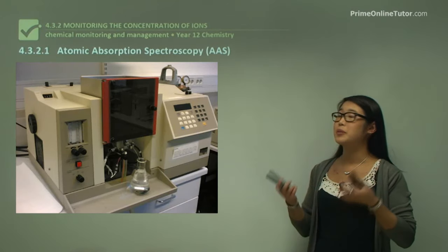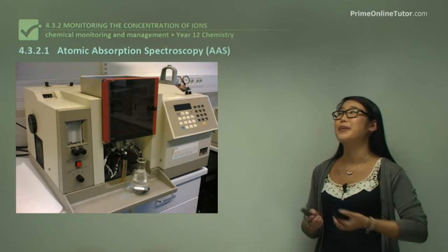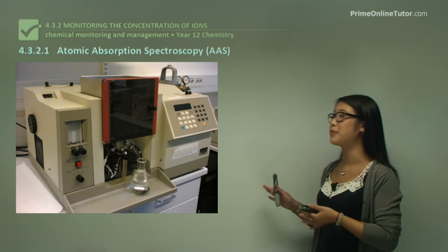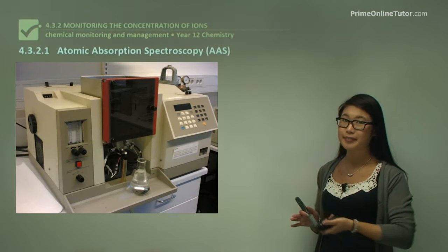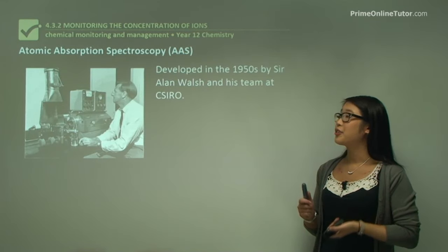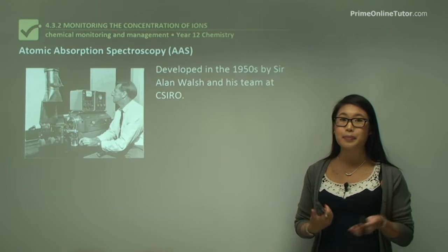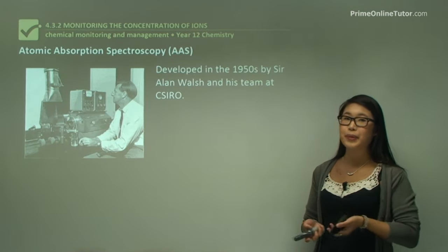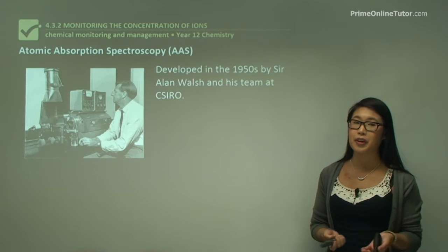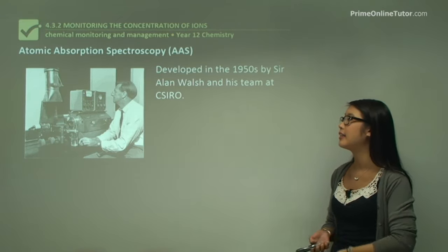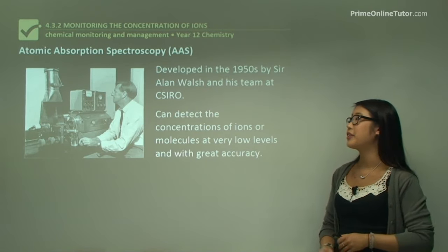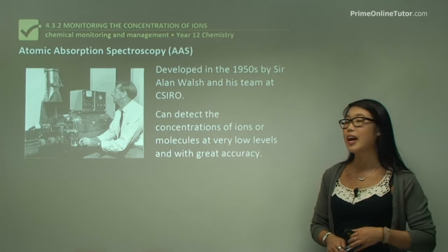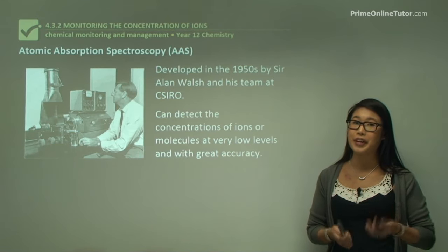Atomic absorption spectroscopy is a mouthful, so I'll be using AAS from now on. This picture is just one of the types of machines that can be used for AAS. AAS was developed in the 1950s by Sir Alan Walsh, who was working at the CSIRO in Sydney with a group of colleagues. This technique is really important because it can detect concentrations of ions and molecules at really low levels but also with great accuracy, which was not available at the time.